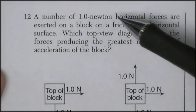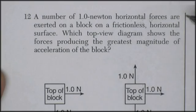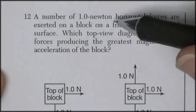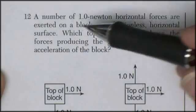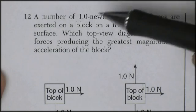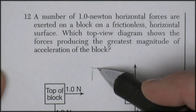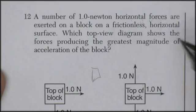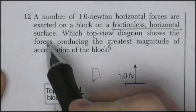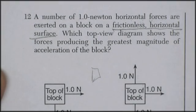Question 12 deals with some pictures. A number of 1 Newton horizontal forces are exerted on a block on a frictionless horizontal surface. Which top view diagram shows the forces producing the greatest magnitude of acceleration? So I've got a block here on a frictionless surface. Now, us physics teachers have frictionless surfaces in our back storage rooms. The problem is none of us have figured out how to pick it up to carry it out to show to you students.